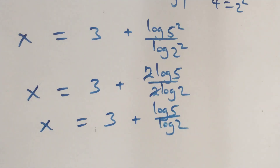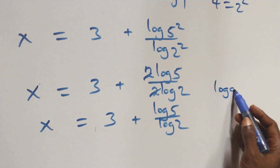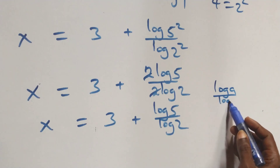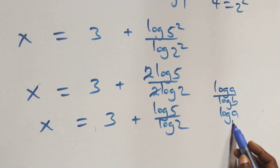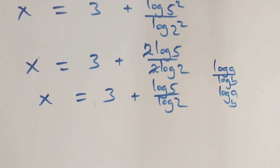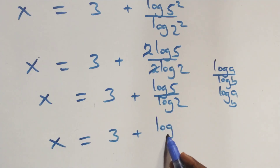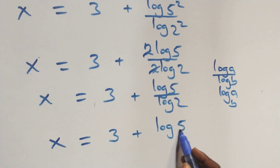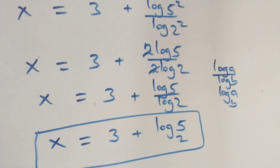Applying the change of base rule, log a over log b is the same thing as log a to base b. What we have here becomes x equals to 3 plus log 5 to base 2. So the value of x equals to 3 plus log₂5.